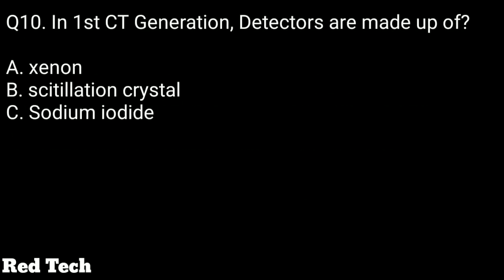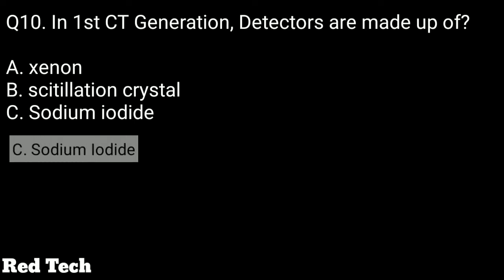Question number ten: in the first CT generation, detectors are made up of what? The options are xenon, scintillation crystal, or sodium iodide. The right answer is sodium iodide — first generation CT detectors are made up of sodium iodide. That covers all 10 MCQs on exposure factors and first generation CT.